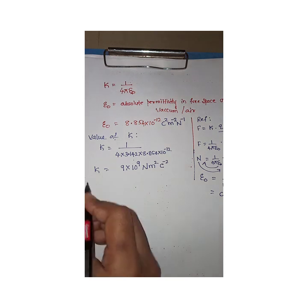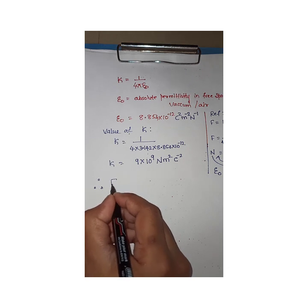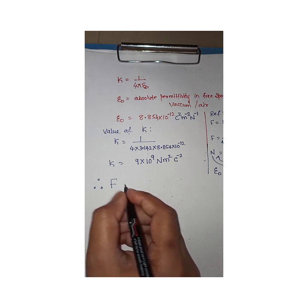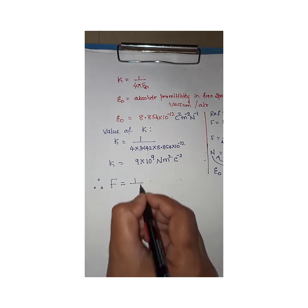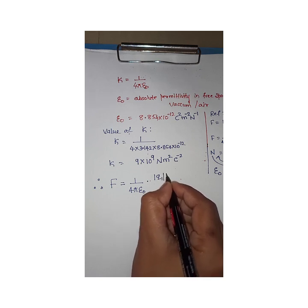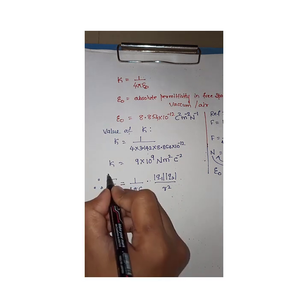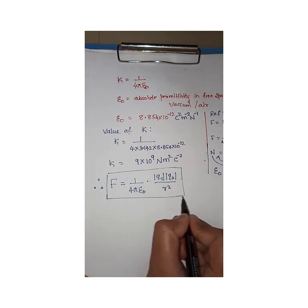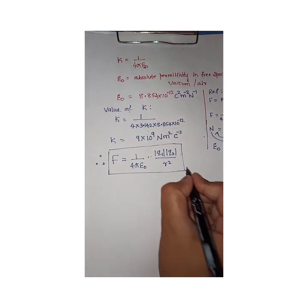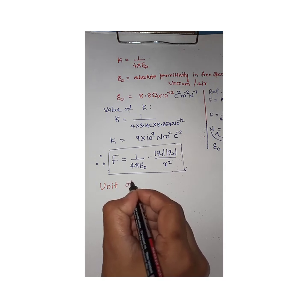So the final scalar form of Coulomb's Law is: F = (1/4πε₀) · |Q1||Q2| / r². This is called the scalar form of Coulomb's Law.